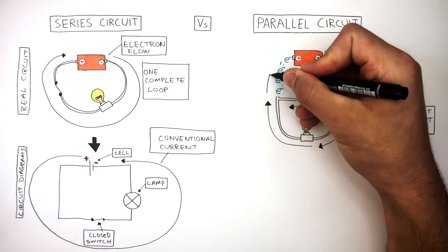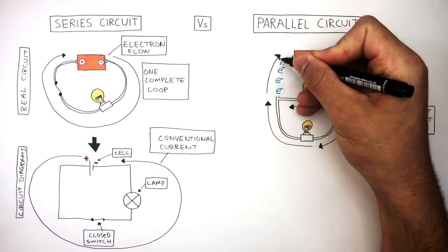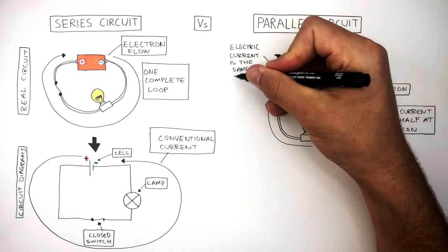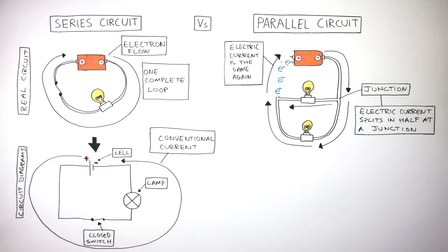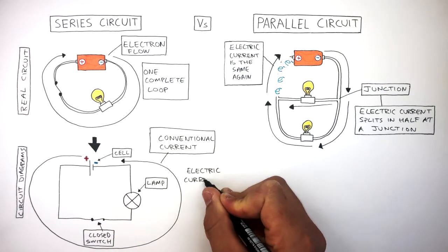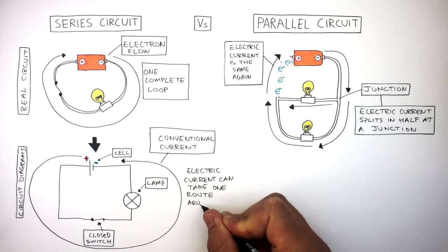These electrons flow back into the positive terminal of the cell to begin the cycle again. The electric current is the same again compared to the electric current which started coming out of the negative terminal of the cell. In a parallel circuit, the electric current can take different routes due to the different loops. Whereas in a series circuit, there is only one loop, so the electric current can only take one route around the circuit.